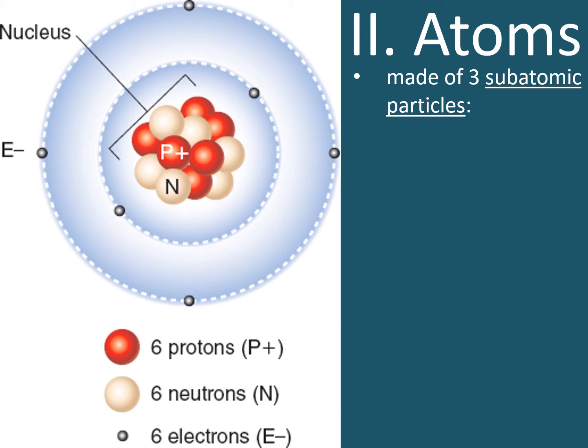There are three subatomic particles. Protons have a positive charge. Neutrons have no charge or are neutral. And electrons are negatively charged. The protons and the neutrons together cluster in the center of an atom, and we call this the nucleus. You can also see surrounding the nucleus in the picture to the left are electrons. These electrons you could think of them orbiting the nucleus like planets around the sun.